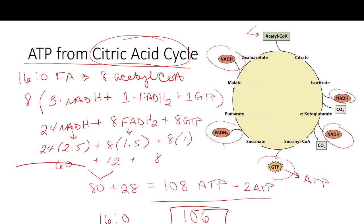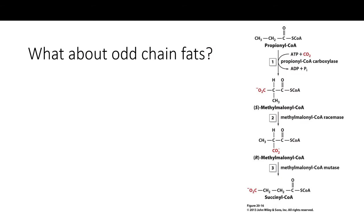Now what happens with an odd-chain fat, for example 17:0 fatty acid? A lot of it is the same, but there are a few key differences. First, all fatty acids still get activated, so we still have an activation penalty of 2 ATP. For the number of rounds of beta oxidation with an odd-chain fat, the formula is (N − 1) ÷ 2 − 1, so for 17:0: (17 − 1) = 16, divided by 2 = 8, minus 1 = 7 rounds.